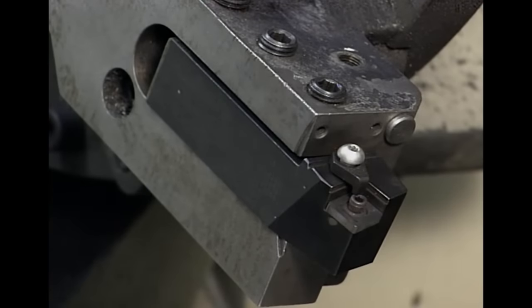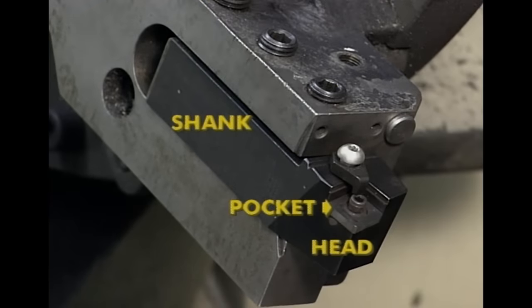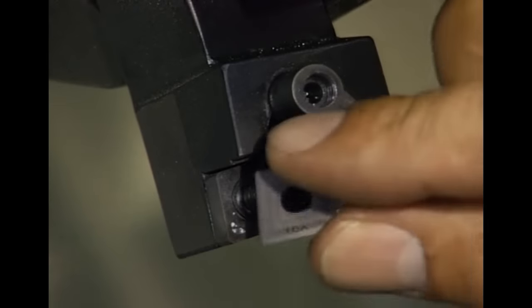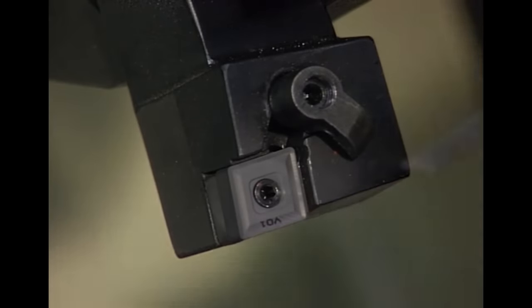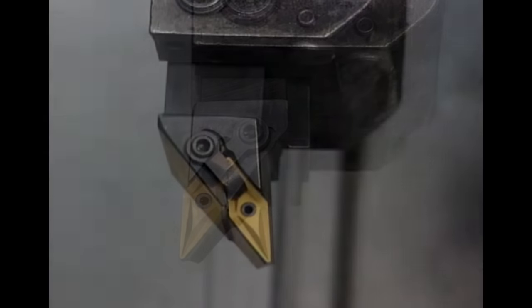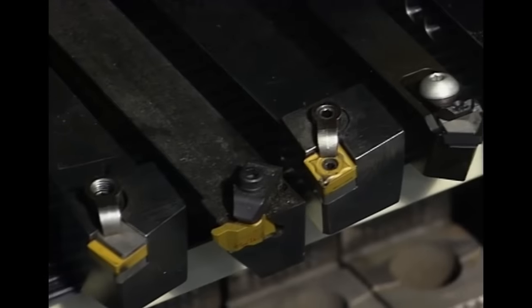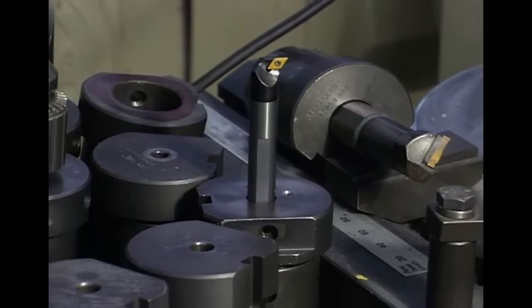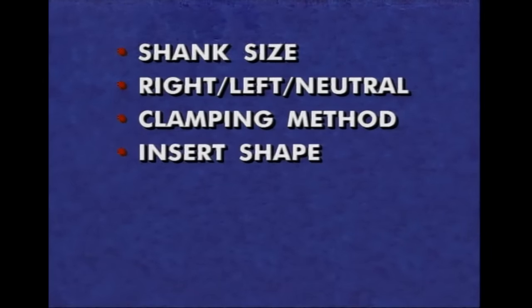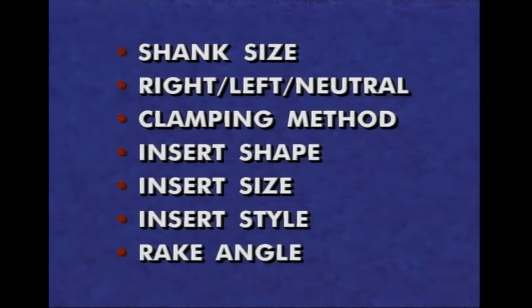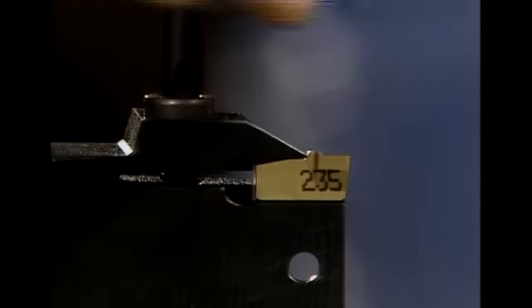Insert type tool holders for turning are made of steel and consist of a shank, head, pocket, and clamping hardware. Tool holder pockets are machined to accurately locate and orient the insert. Sometimes a carbide seat is used between the pocket and the insert. Tool holders are also either left-handed, right-handed, or neutral. They are designated by the shank size, hand of the tool, method of clamping, insert shape, insert size, insert style, and rake angle. Tool makers have clamping systems for their various insert families; roughing and finishing tools may have different clamping mechanisms or clamp configurations.